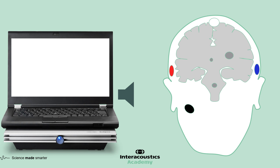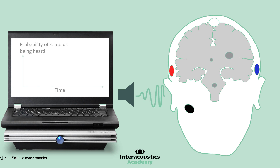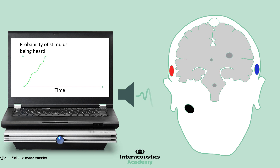The evoked potential device records this activity over time while looking for a response. If a hearing response is present, then it must reach a defined level of certainty before it is classified as a clear response.